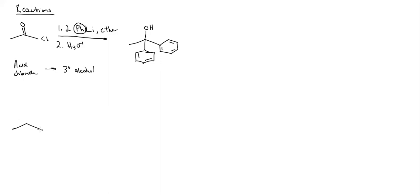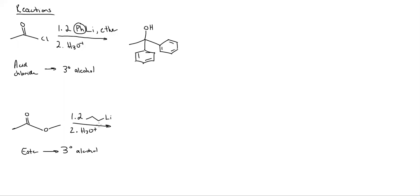Now let's take a look at this with an ester. Esters, just like in the last video, also become a tertiary alcohol. Same thing is going to happen. We'll use two equivalents of this organolithium. I get rid of this group and put an OH there, and I just add this group twice — so three carbons twice: one, two, three, one, two, three. So this is my product.